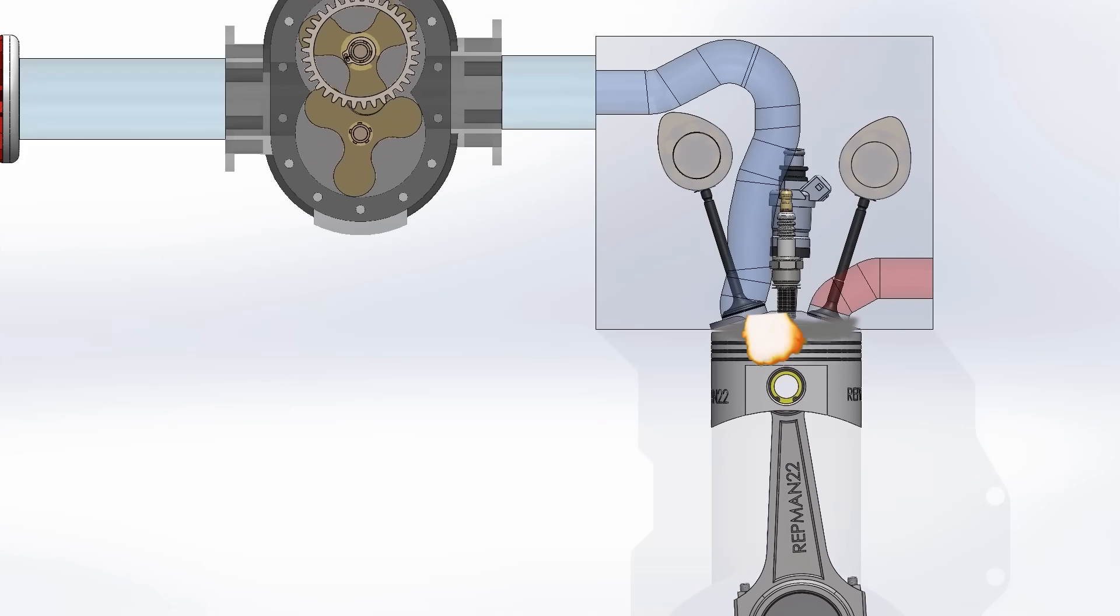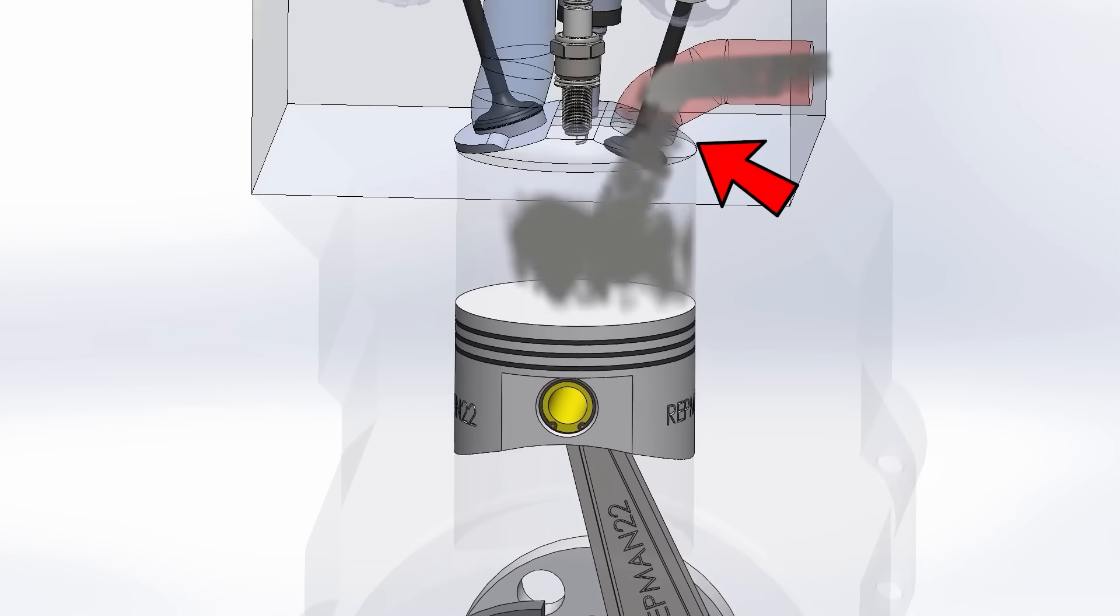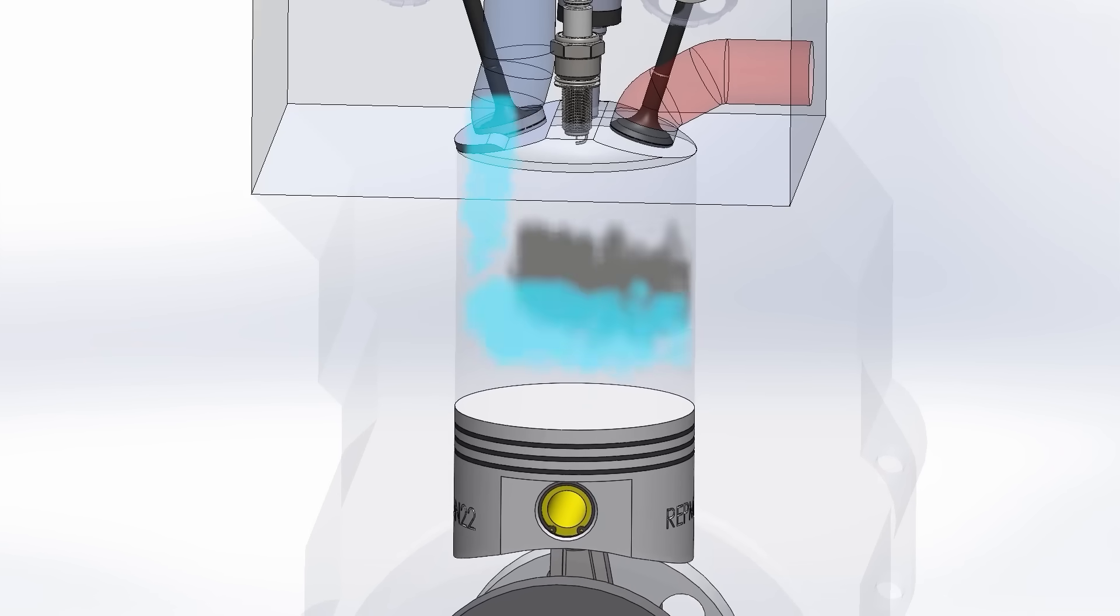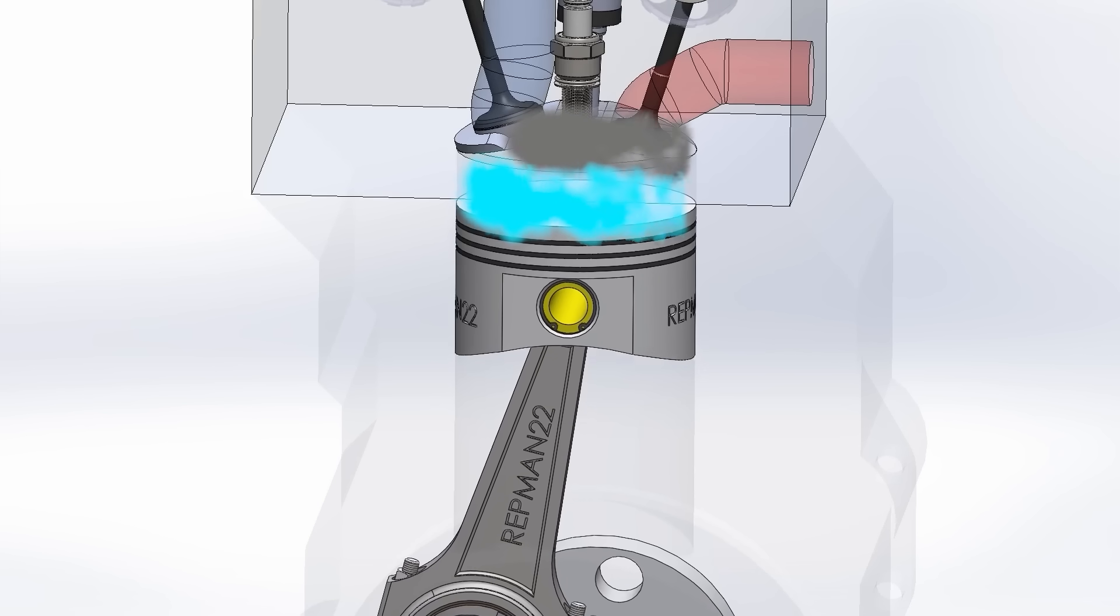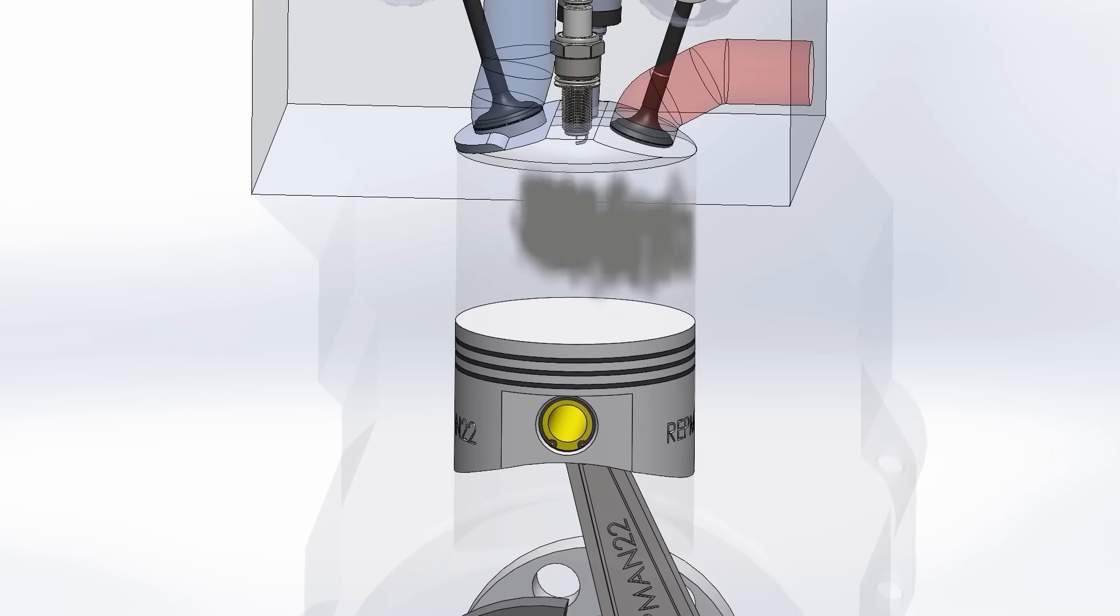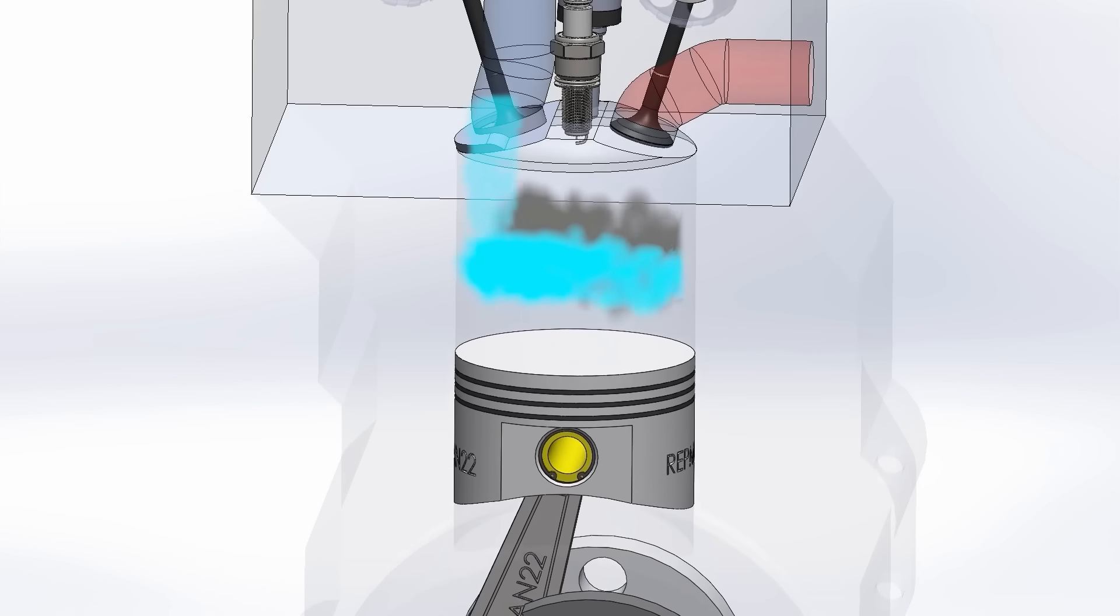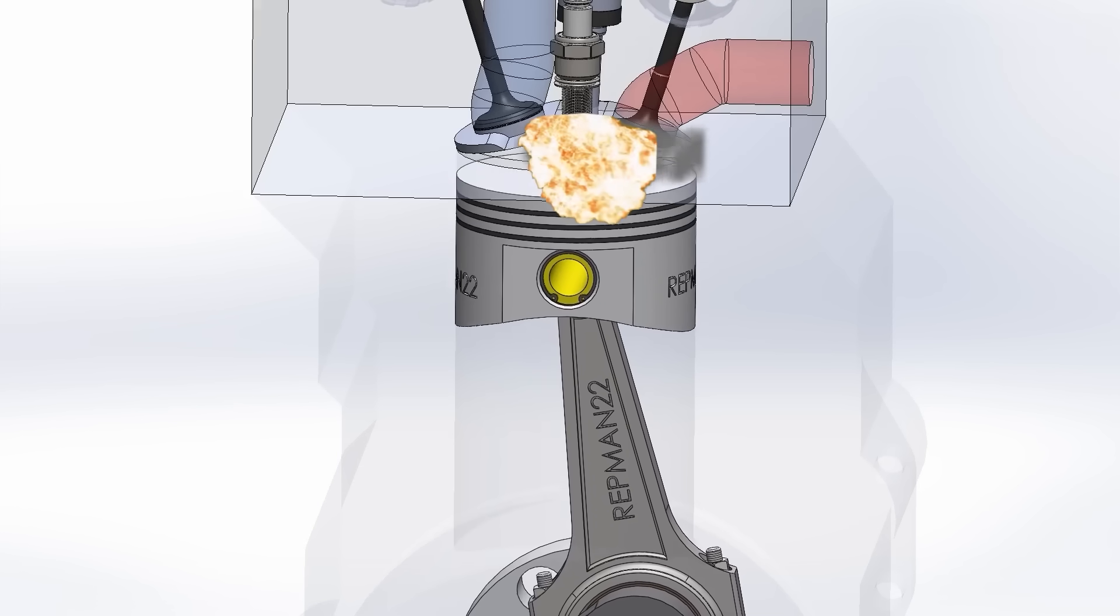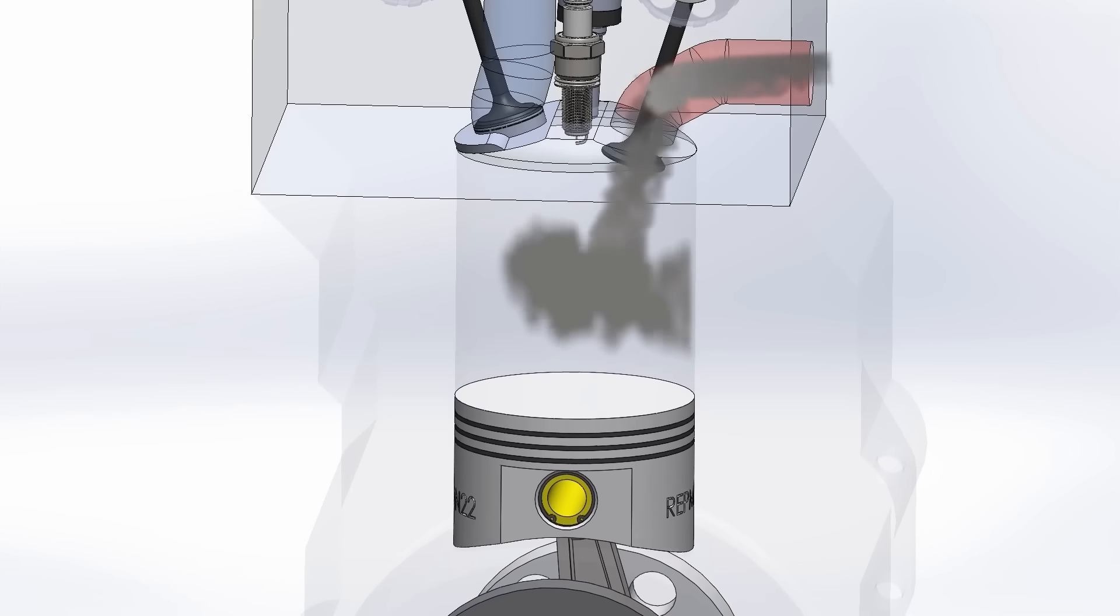Under low-load conditions, the exhaust valve closes early and prevents exhaust gases from escaping. This exhaust gas stays in the cylinder, completing the volume and increasing compression, giving more power, reducing pumping losses, and keeping compression high. The high temperature of the already burned gases also allows the engine to run without using the spark plug, since, as in all diesel engines, the mixture is injected at the last moment and ignites due to compression and temperature.